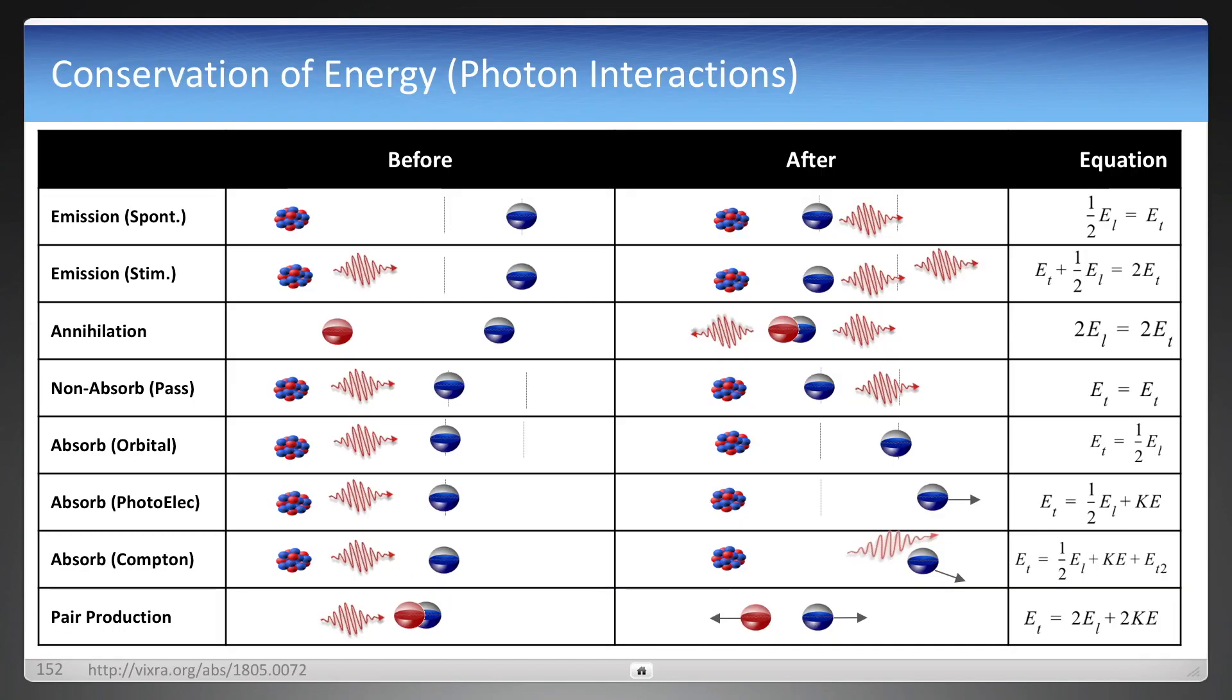There are many different ways that photons are created and absorbed. This is some of them. The equations there on the right just illustrates the conservation of energy. I won't go through all of these details, but I will show examples of three.